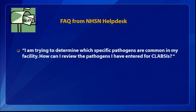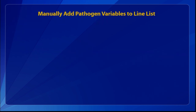Here's an example to help us get started — a question we received at the NHSN help desk: 'I am trying to determine which specific pathogens are common in my facility. How can I review the pathogens that I've entered for all of my CLABSIs?' There are a few ways you can do this. One way is to manually add the pathogen variables to the line list, and I'm going to walk you through step-by-step how you can do that.